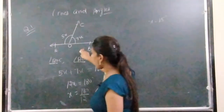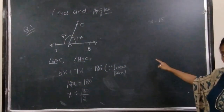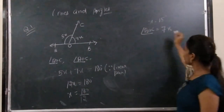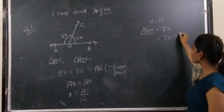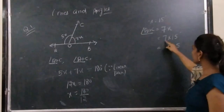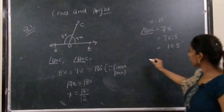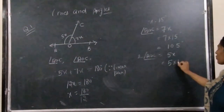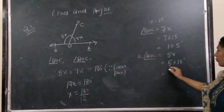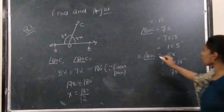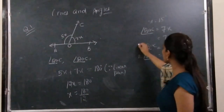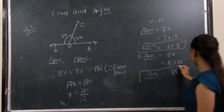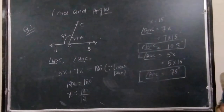We don't have to find only X — we have to find angle BOC and angle AOC. Angle BOC equals 7X; putting the value of X, 7 into 15 equals 105 degrees. And angle AOC equals 5X; 5 into 15 equals 75 degrees. So we have calculated the two angles BOC and AOC with the help of the linear pair concept.